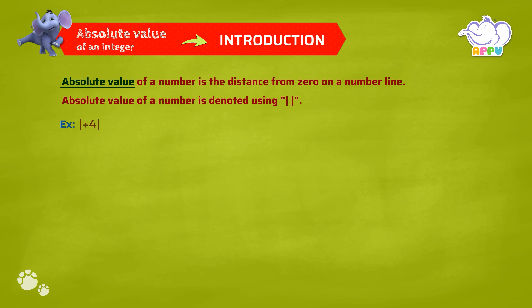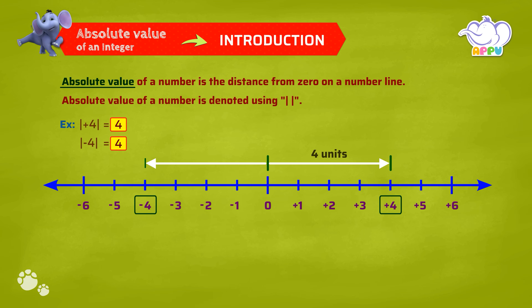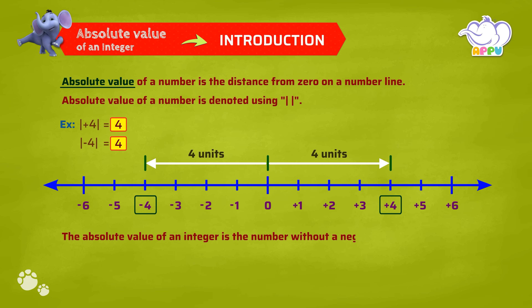For example, the absolute value of plus 4 is equal to 4. This means that plus 4 is 4 units away from 0 on a number line. The absolute value of minus 4 is also equal to 4. This means that minus 4 is also 4 units away from 0 on a number line. Basically, the absolute value of an integer is the number without a negative sign.